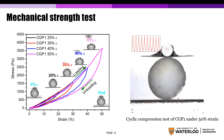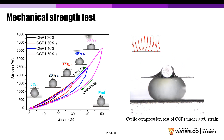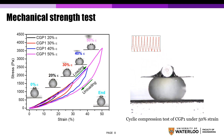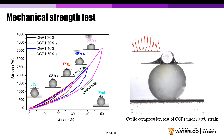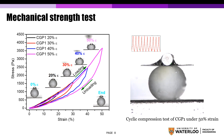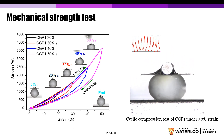The mechanical strength of the aerogel beads was measured by our microtester instrument. Clearly, a strong network was produced after the cross-linking reaction. The beads could recover to their original state without dissociation after 10 cycles of compression testing when 50% strain was applied, as we can see in this video.